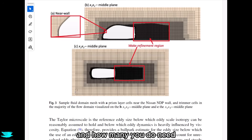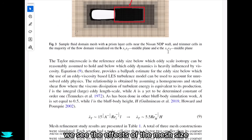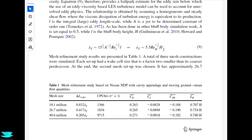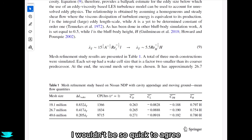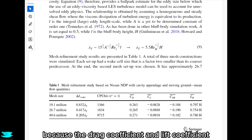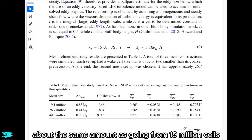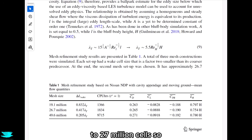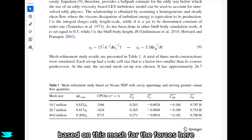Speaking of cells, how many did the authors actually need? In table 1 we see the effects of mesh size in millions of cells. The authors concluded that 27 million cells were enough. From this table alone I wouldn't be so quick to agree, because the drag coefficient and lift coefficient both change quite a bit going from 27 million to 50 million cells — about the same amount as going from 19 million to 27 million. So I don't think the solution has converged yet based on mesh for the forces.